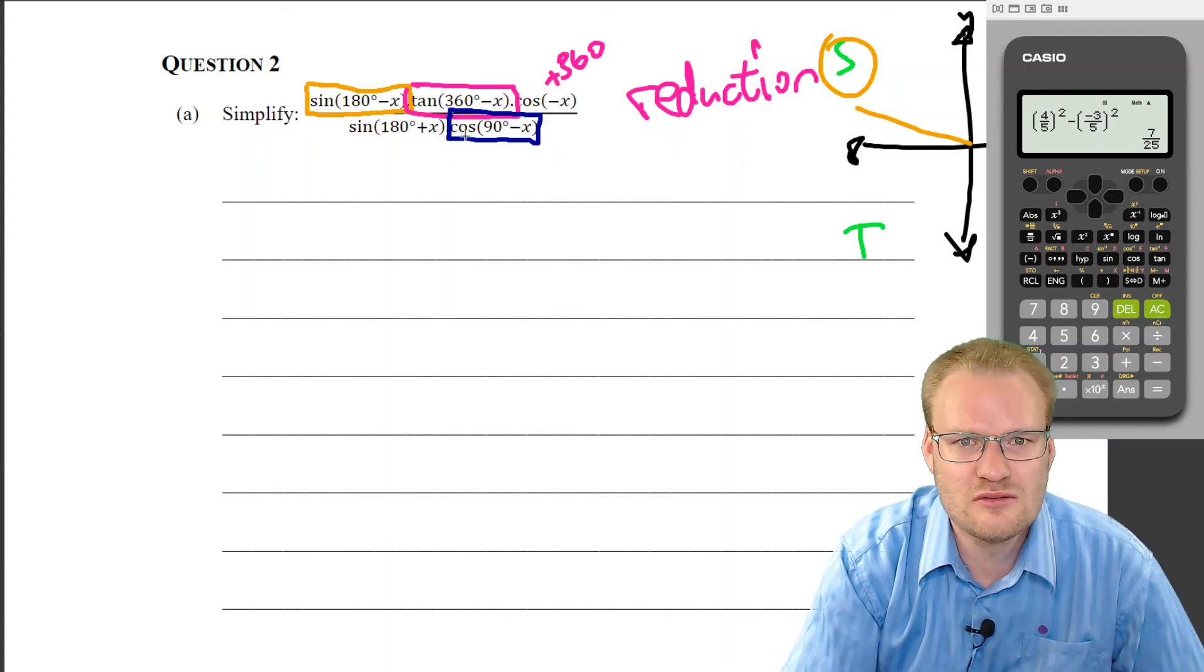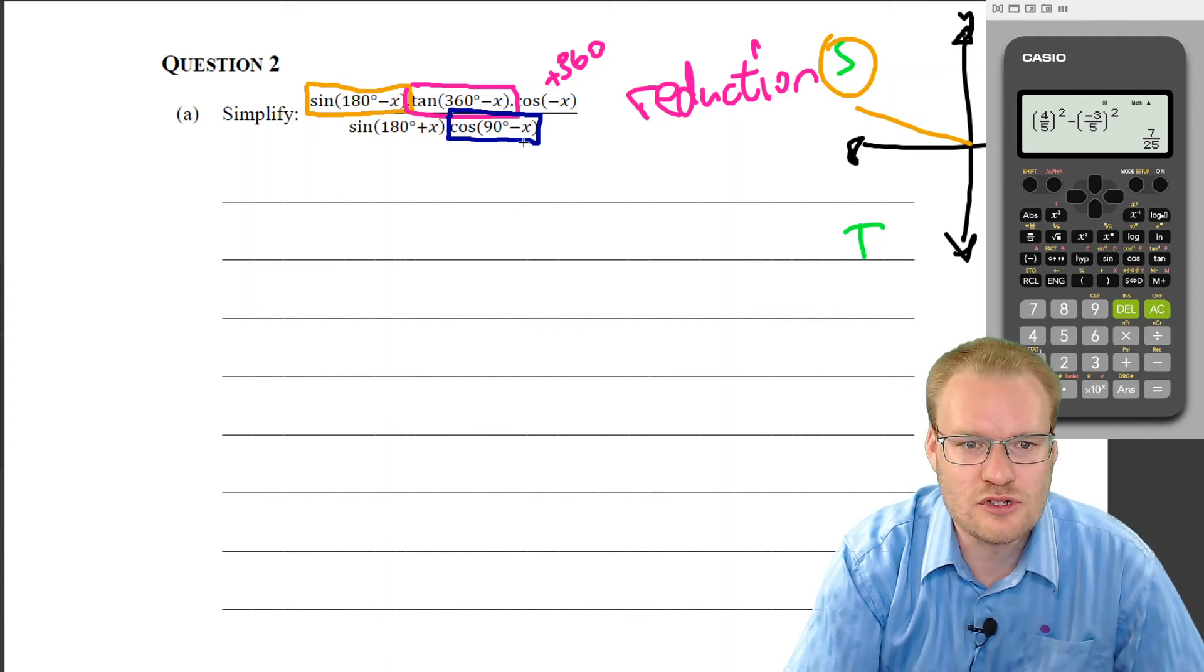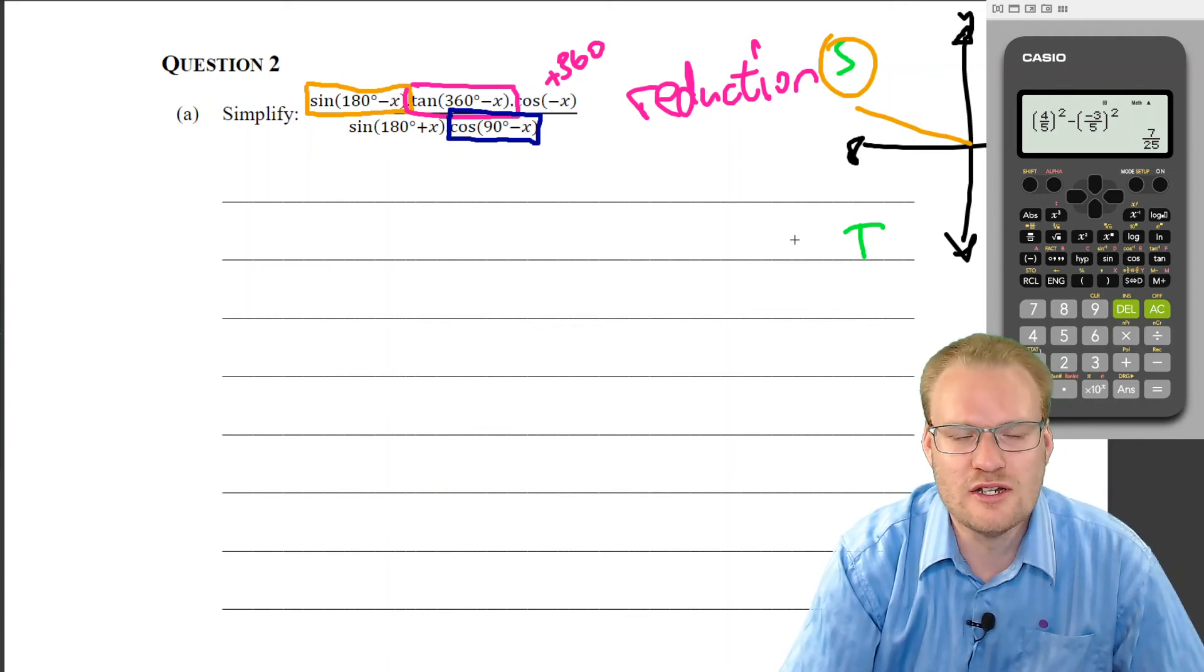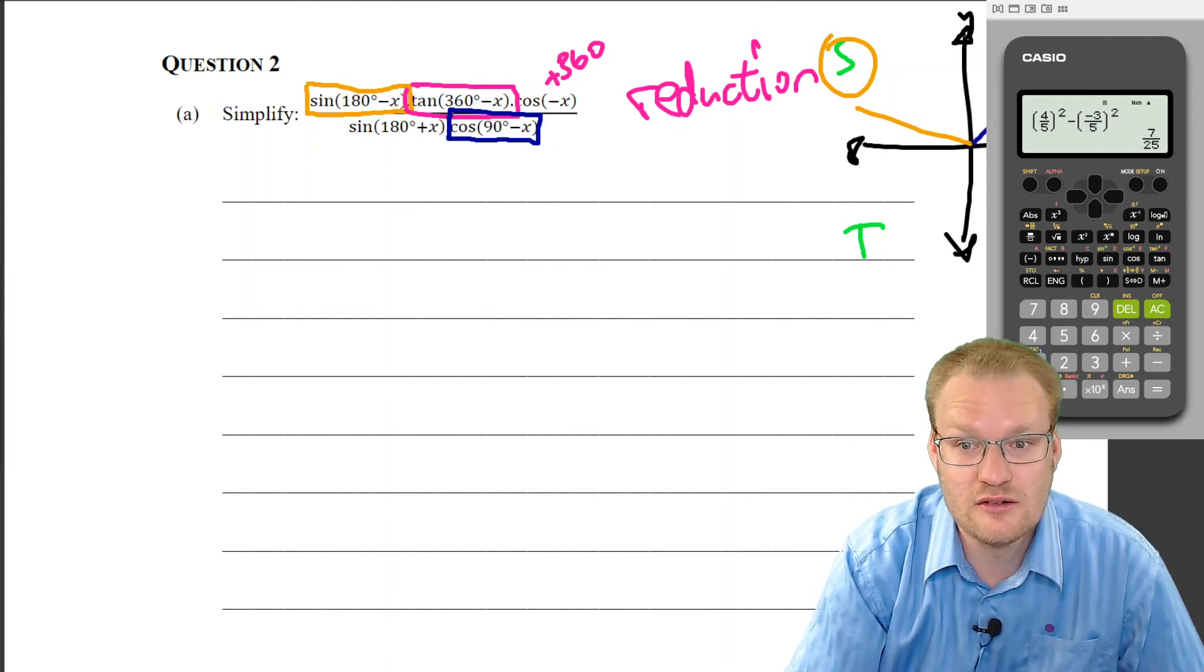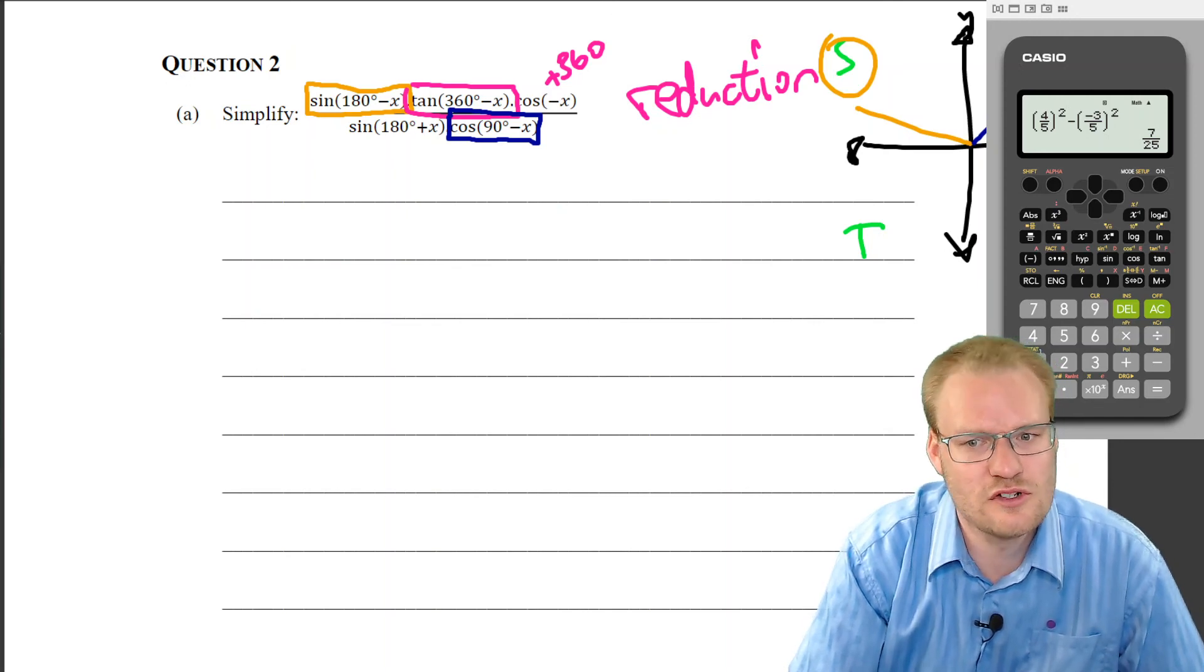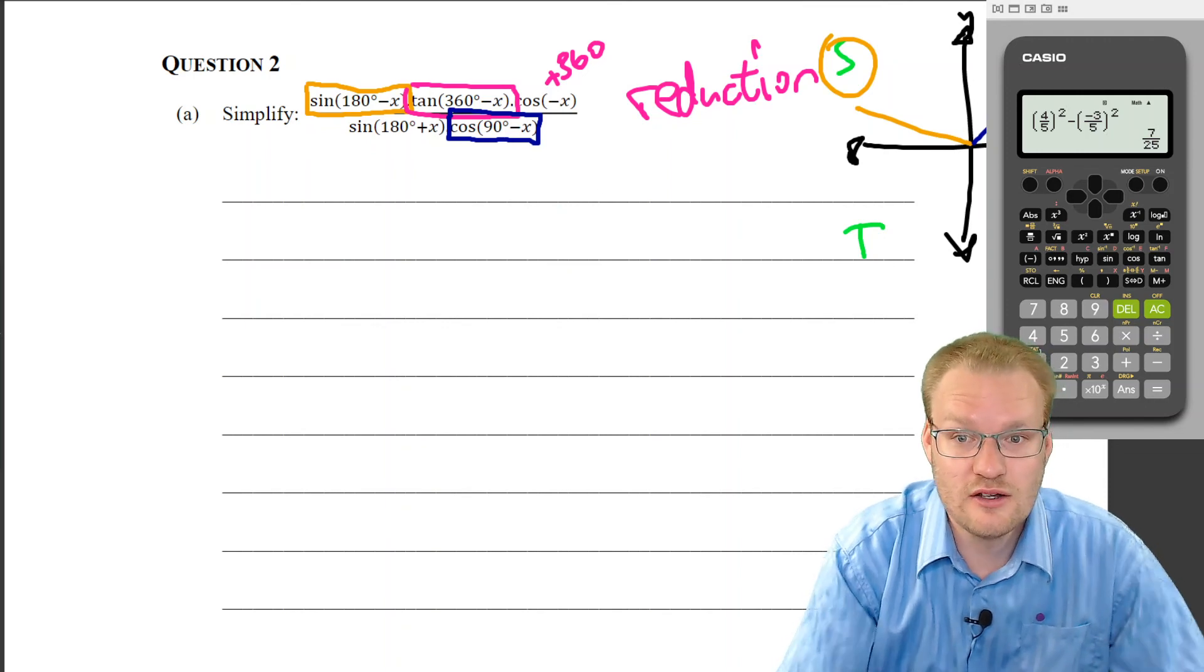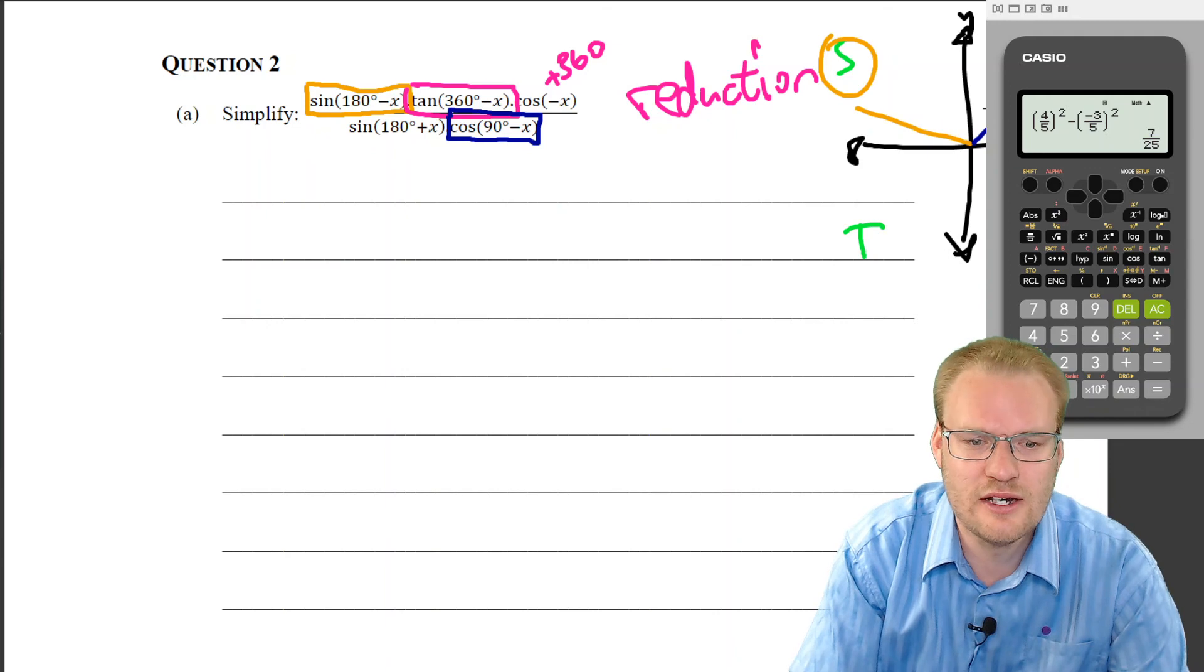Well, cos, remember, cos changes to sine, and so it'll be sine x. Then we need to work out is it positive or negative. Which quadrant is 90 minus x sitting in? That was just like our freestanding triangle: if that one's x, then that one's 90 minus x, so it's still positive, just changes from cos to sine. But the other way is just look in the Cartesian plane, 90 minus, and there it is.